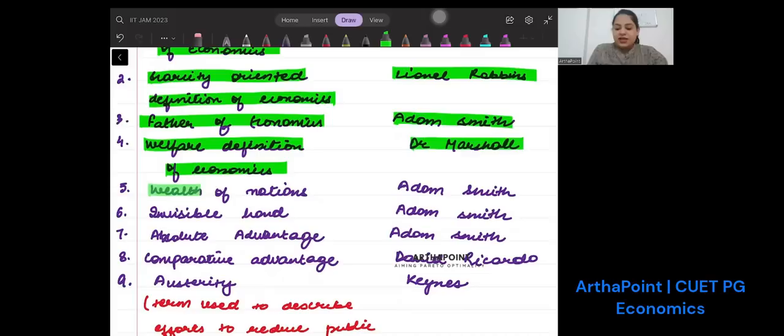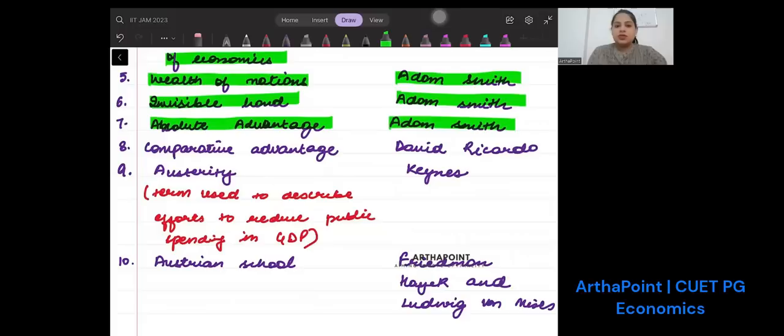Wealth of Nations was given by Adam Smith. Invisible hand was given by Adam Smith. Absolute advantage was given by Adam Smith. Comparative advantage was given by David Ricardo.